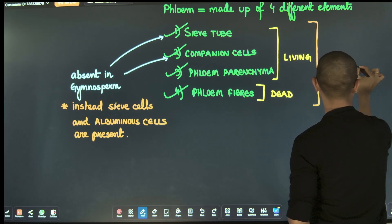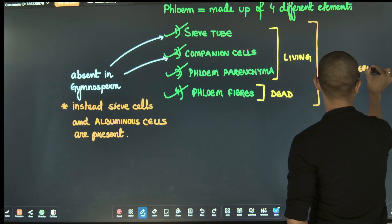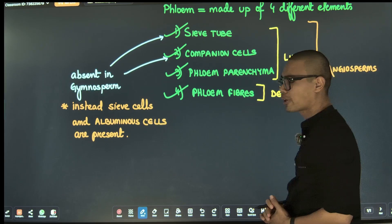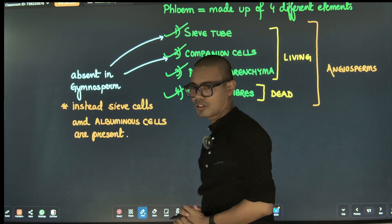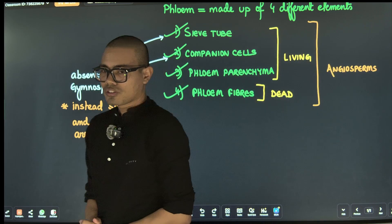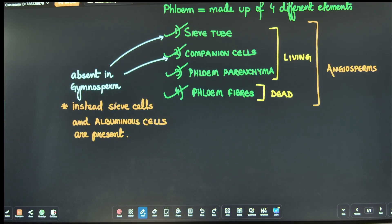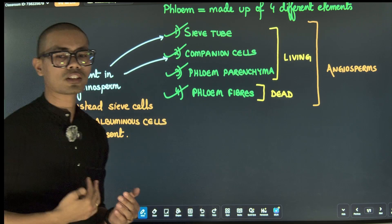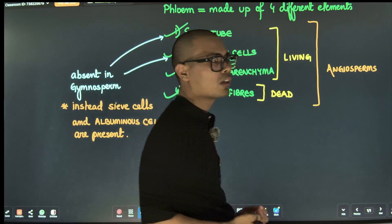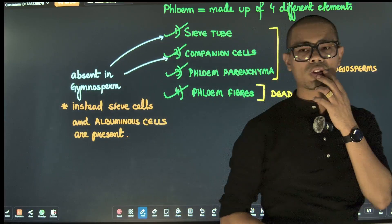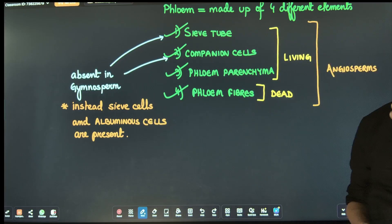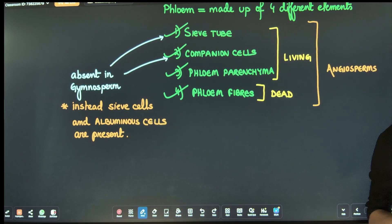In angiosperms, all four kinds of phloem cells are present. Whereas in gymnosperms, sieve tubes are absent, companion cells are absent. Instead of sieve tubes, sieve cells are present, and instead of companion cells, albuminous cells are present.